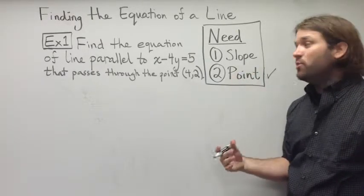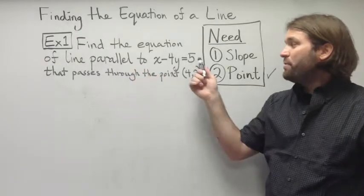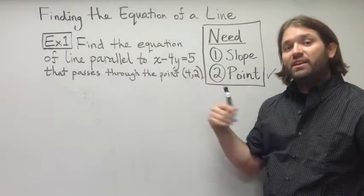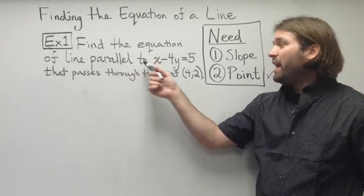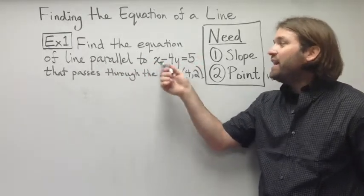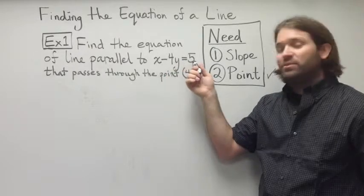In order to find the slope, we need to use this other piece of information that they give us. So, we know that the line that we want is parallel to this line, x minus 4y is equal to 5.